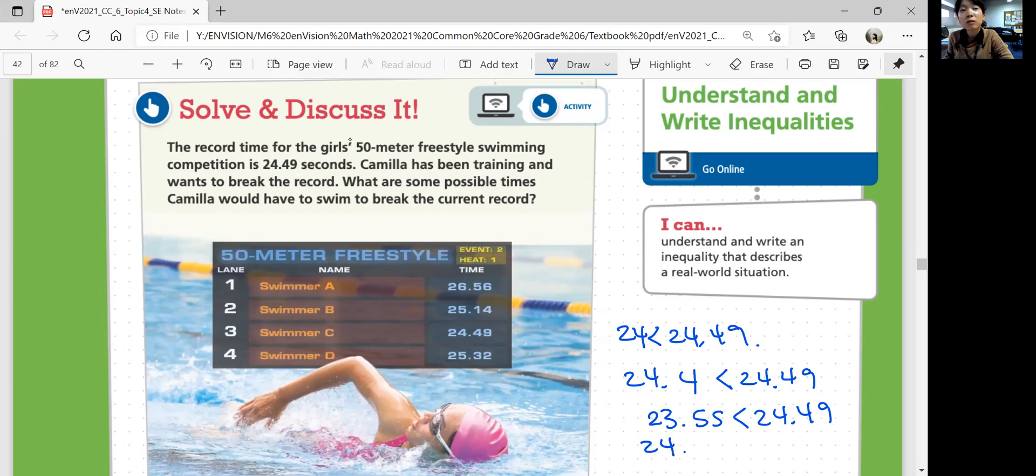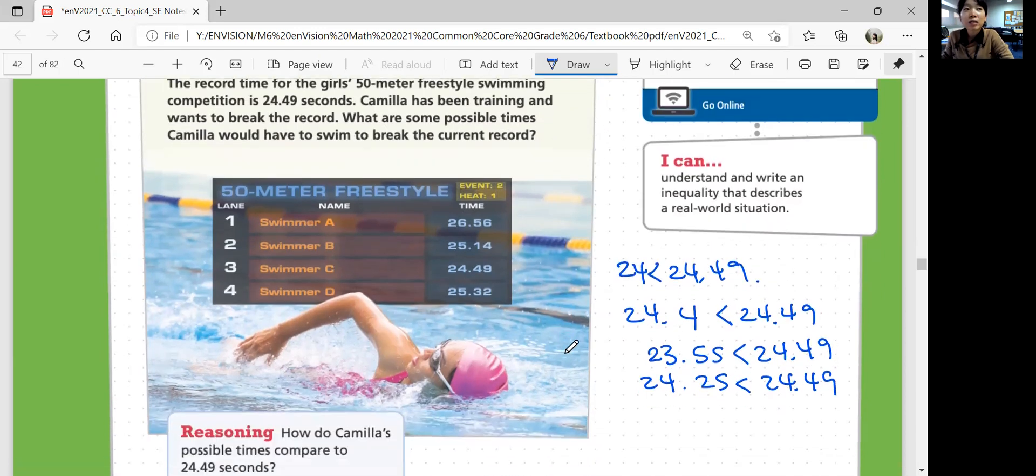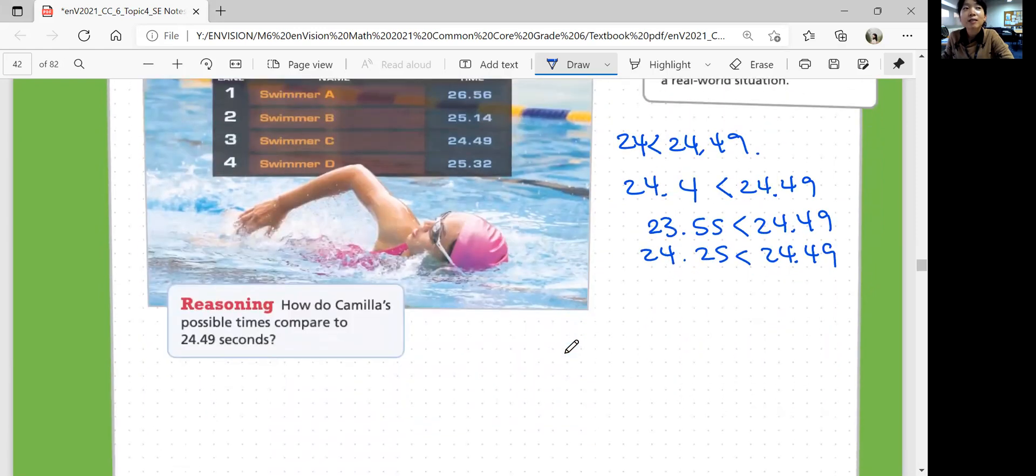Or 23.55, that's also less than 24.49. 24 point, that's super fast, right? Or 24.25, that's less than 24.49. So any number that's less than 24.49. Obviously, she can't swim in one second. That's not how it goes. Like she actually needs a reasonable record.